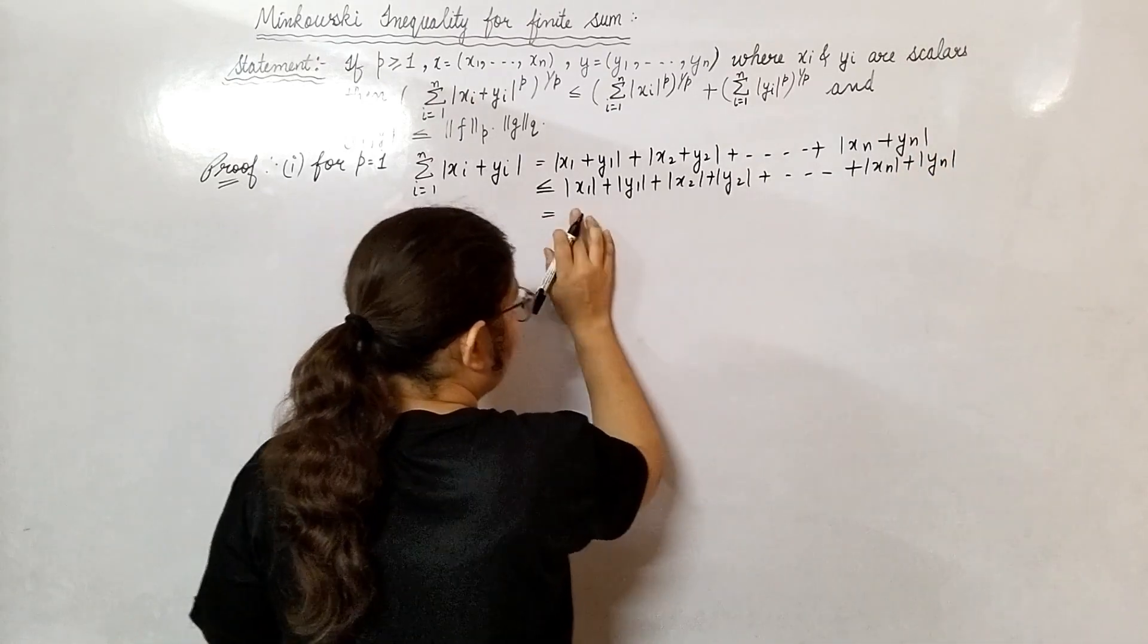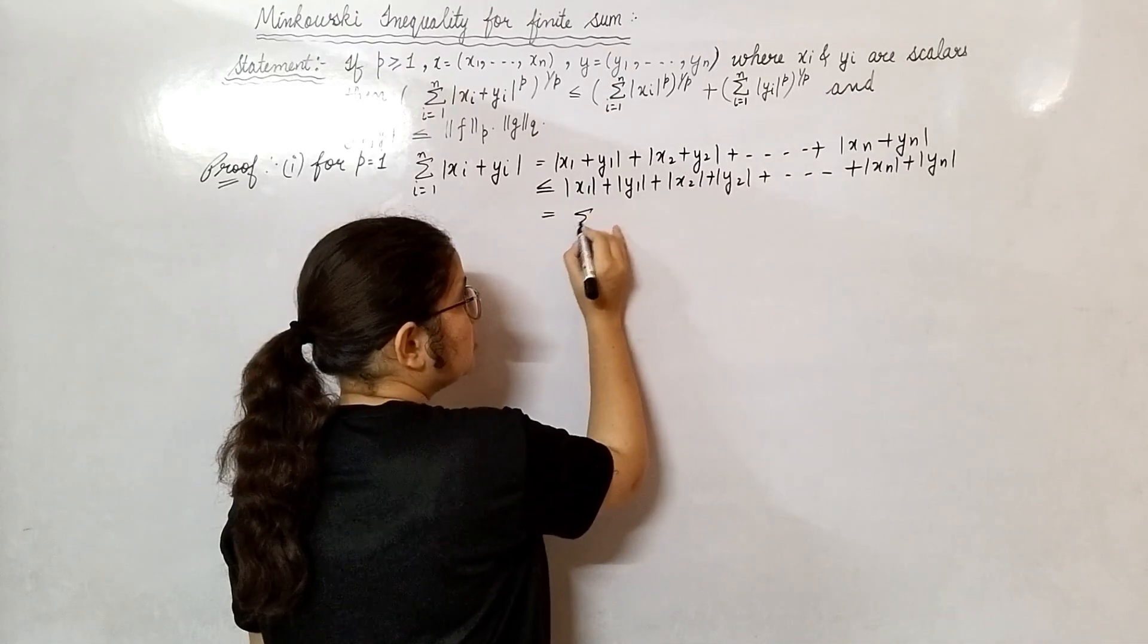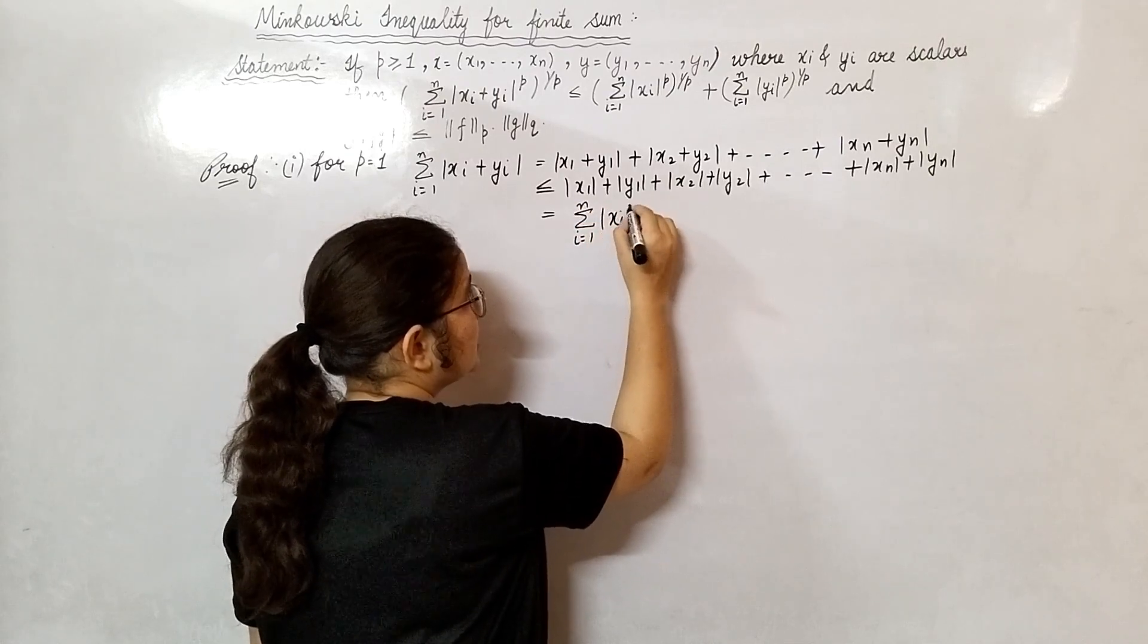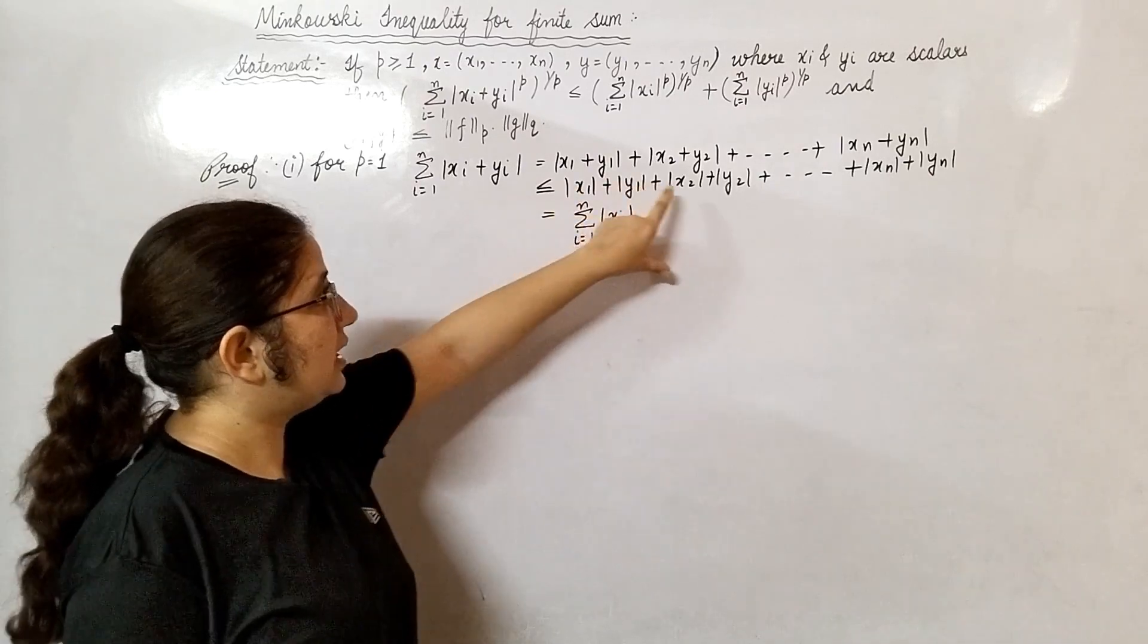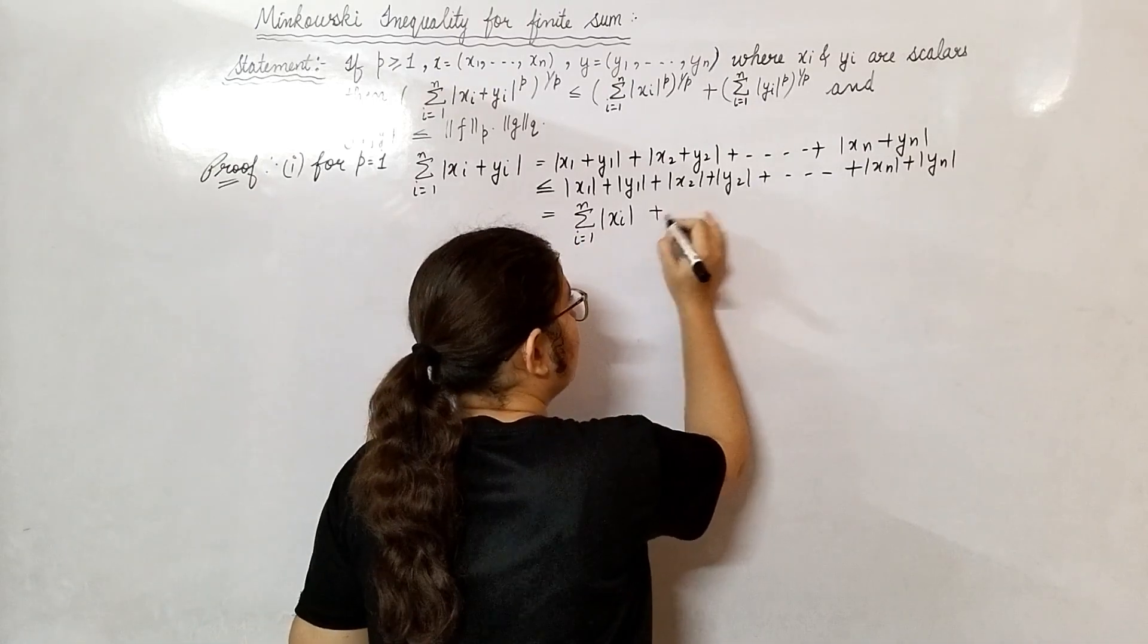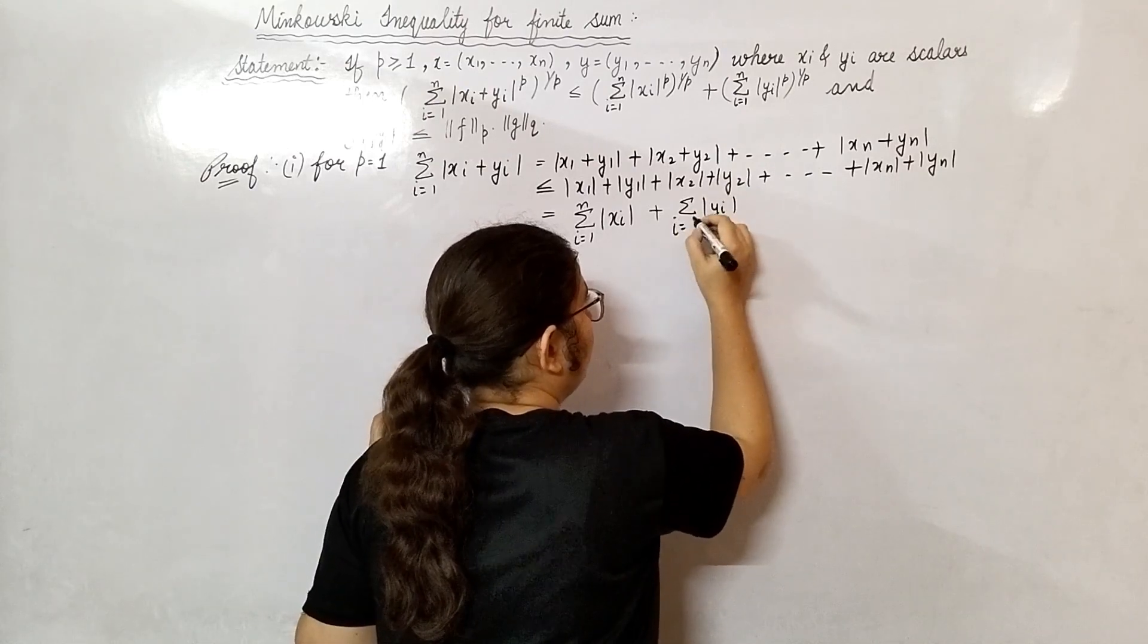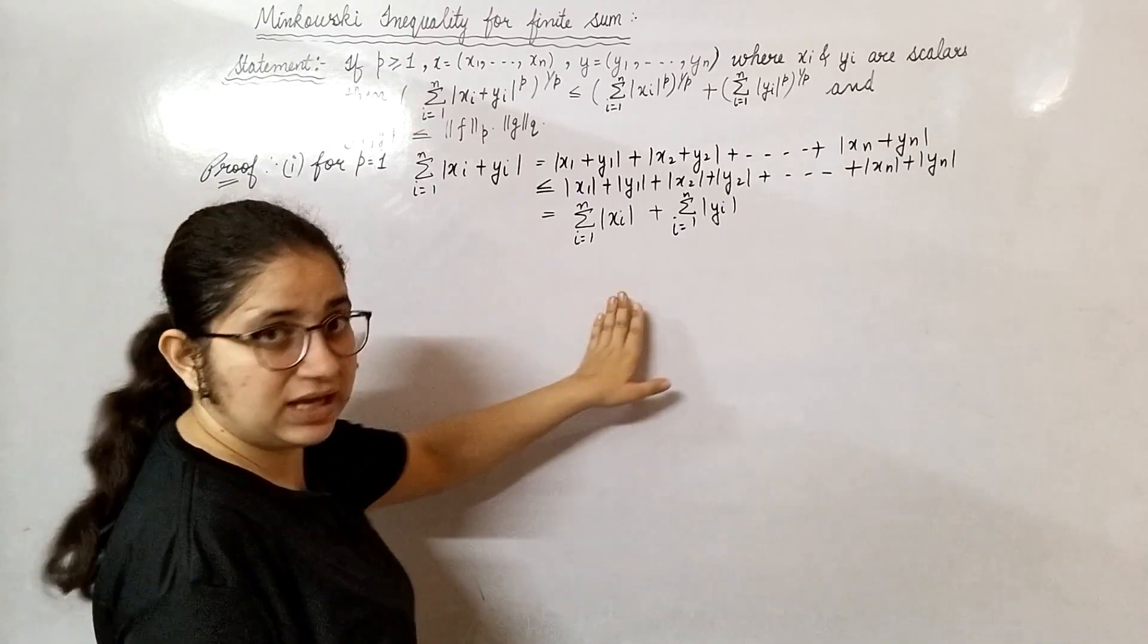When I collect all x_1, x_2, x_n together, I can write summation i from 1 to n, |x_i|. You can write that: x_1, x_2 up to x_n in addition. Summation means addition. Same for y_i, i from 1 to n. So this result is going to hold for p equals to 1.